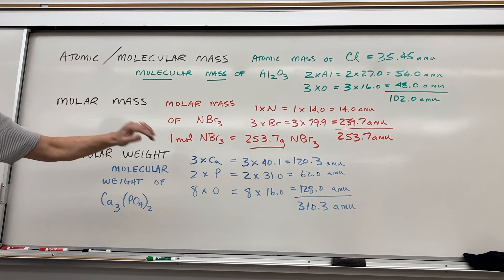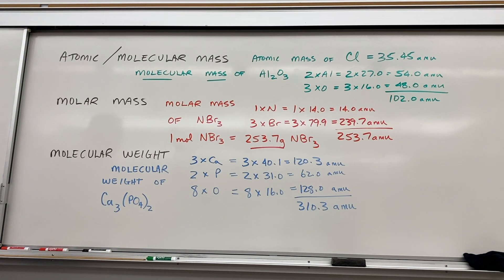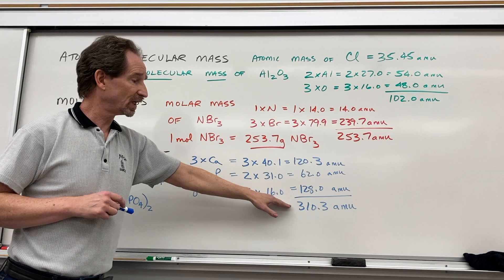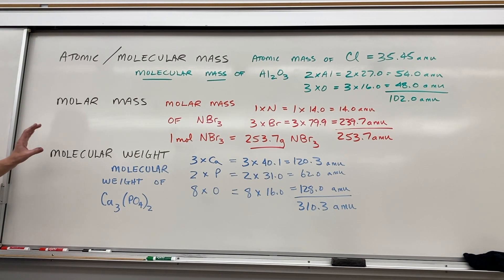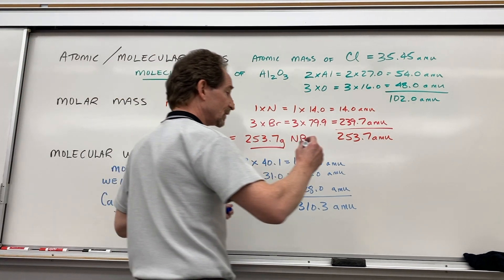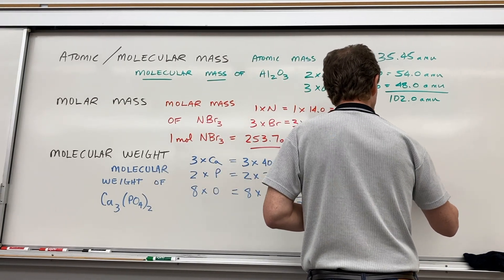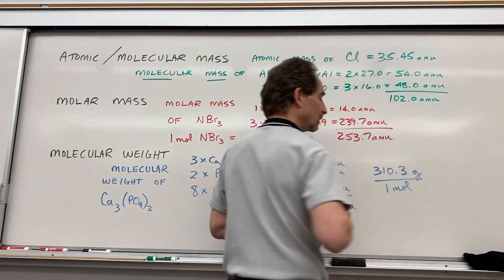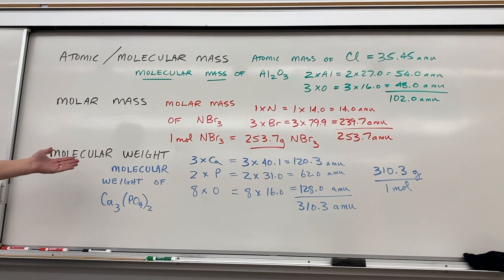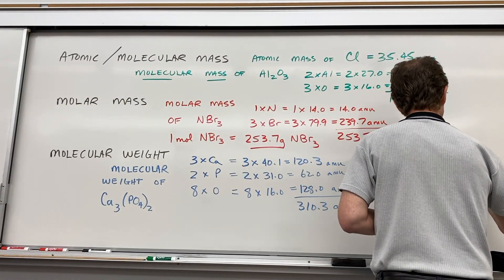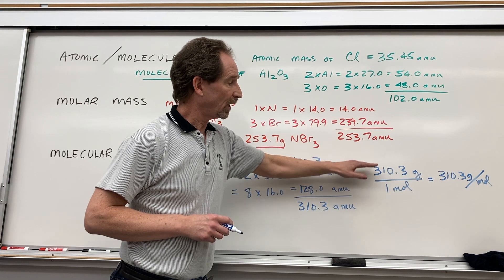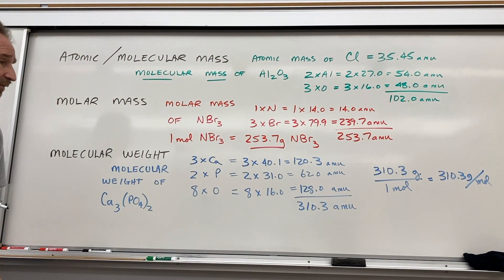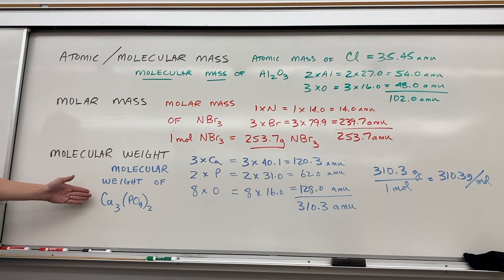If I wanted molecular mass, I'm done — 310.3 atomic mass units. If I want molar mass, this would become 310.3 grams of calcium phosphate in one mole. Since I want molecular weight, I report the same number but as 310.3 grams per one mole. We write that as 310.3 grams per mole, and we understand that to mean 310.3 grams divided by one mole — it's in fact a unitary rate. That is the molecular weight of calcium phosphate.